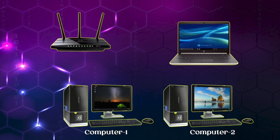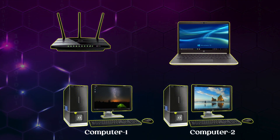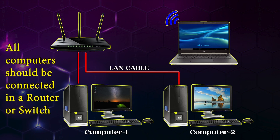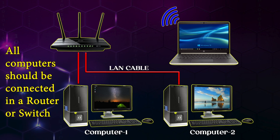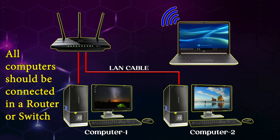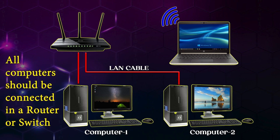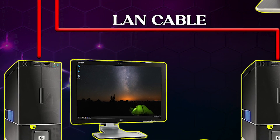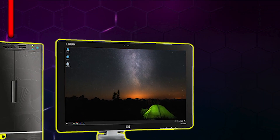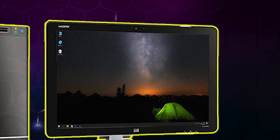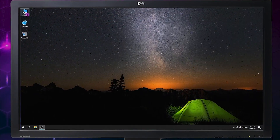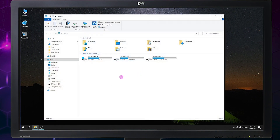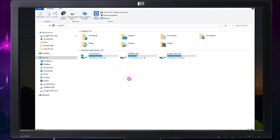First, be sure that all your computers are connected to one router, either in a LAN connection or Wi-Fi connection. Now let's begin our network connection setup. First, click your My Computer or This PC icon, then right-click in this window.